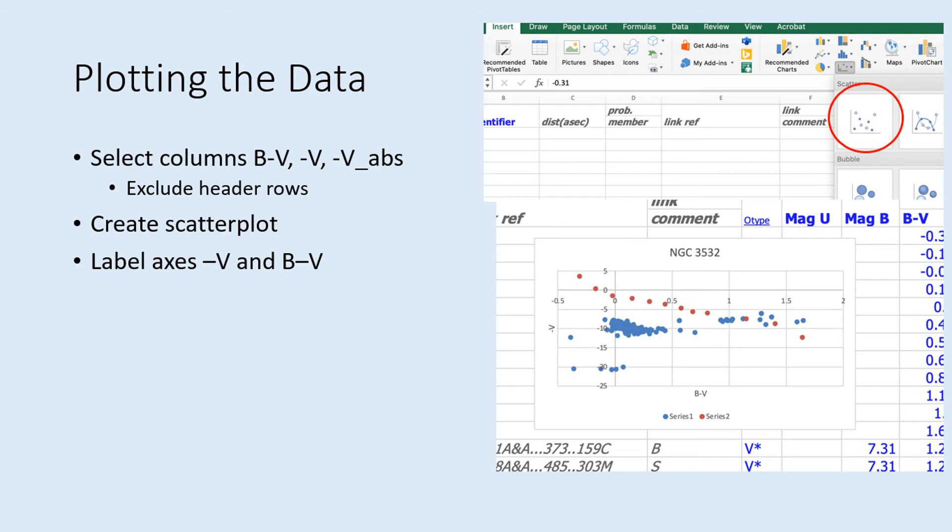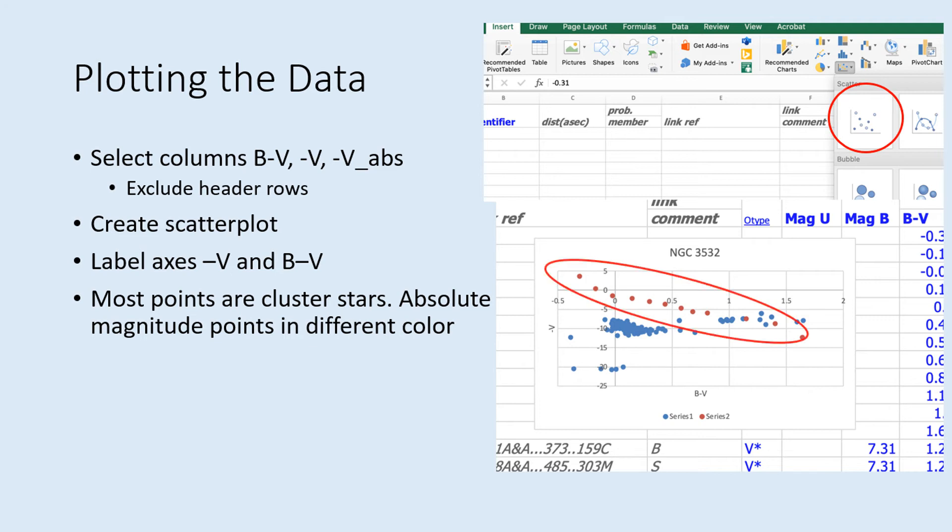You see two different sets of points on the graph. Most of the points will be the stars in the cluster, but there should be a dozen in a different color. Those ones are the absolute magnitude points from Table 2. Let's start by just focusing on the cluster stars. Notice that they make a pattern that is vaguely like the HR diagrams we've seen, though it's probably a much messier graph than the ones you've seen in the lecture part of the course. Real data tends to be like that. Nonetheless, there should be a concentration of stars making up the main sequence. There may also be stars in other regions of the diagram, including some located roughly where the red giants and maybe even white dwarfs should be.